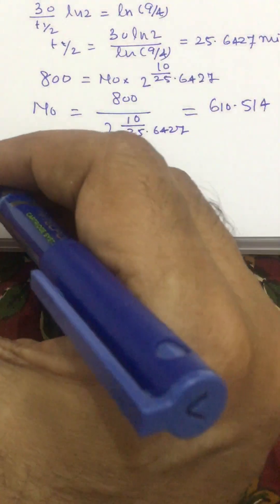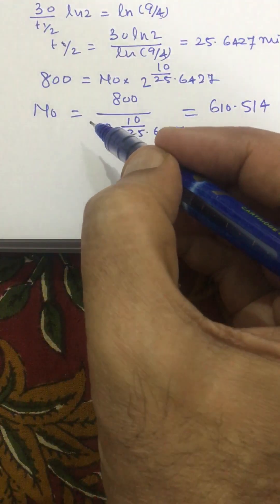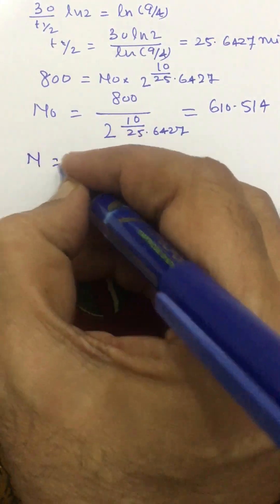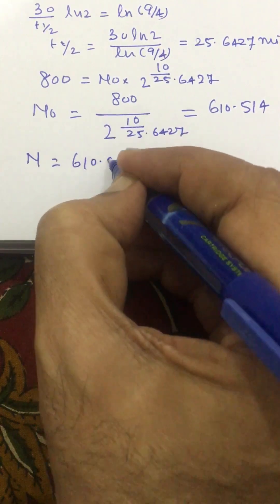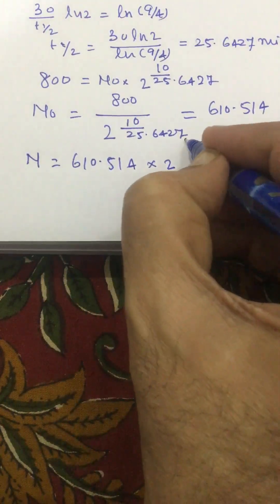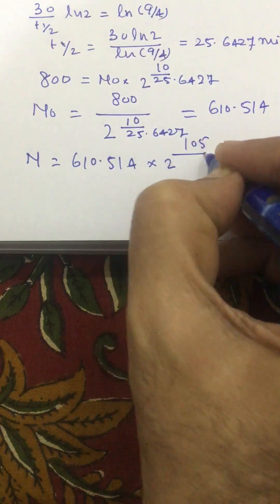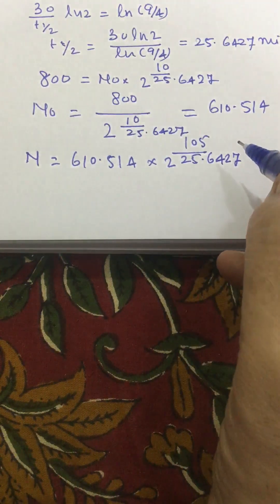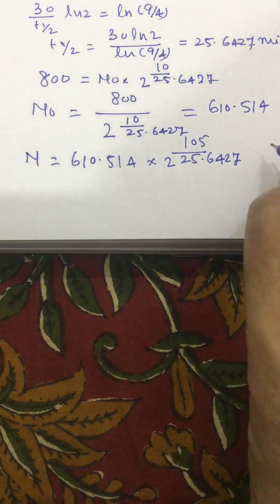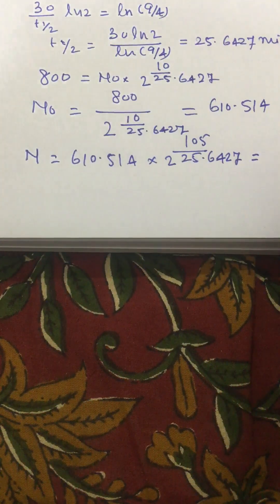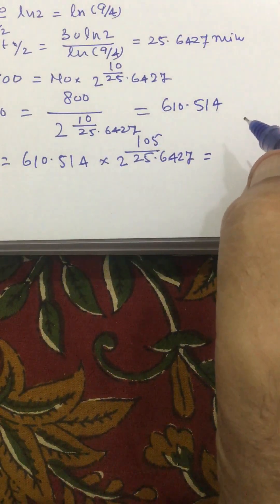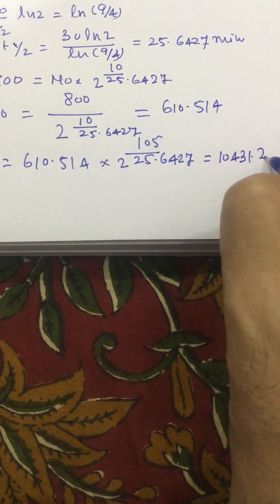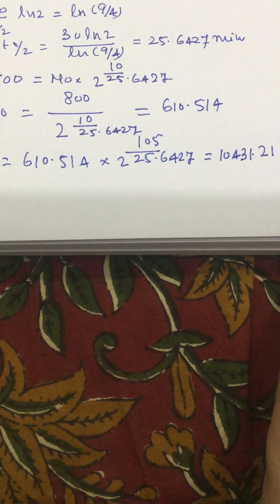Now for Part C, the question is to find the population after 105 minutes. We have n equal to n₀ times 2 raised to the power t over t-half, where n₀ is 610.514, into 2 raised to the power 105 divided by 25.6427. Solving this we get the count after 105 minutes as approximately 10,431.21.